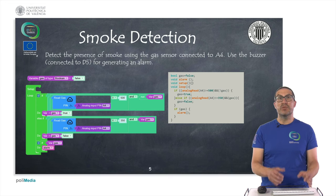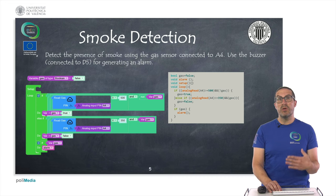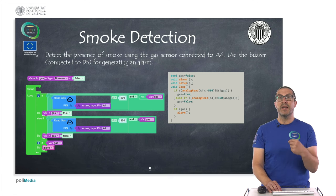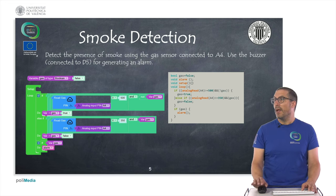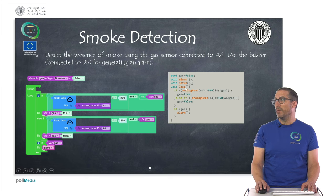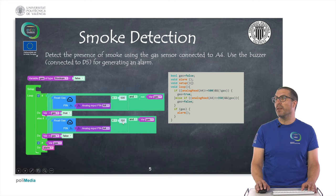In the first exercise, the idea is to detect smoke. The gas sensor is connected to A4, and if it detects smoke, it generates an alarm using a buzzer connected to pin D5. We use an if comparator with the read gas instruction, which is essentially an analog read. If the value is above 500, there is gas; if it drops below 350, the gas is gone. While gas is detected, we generate an alarm.